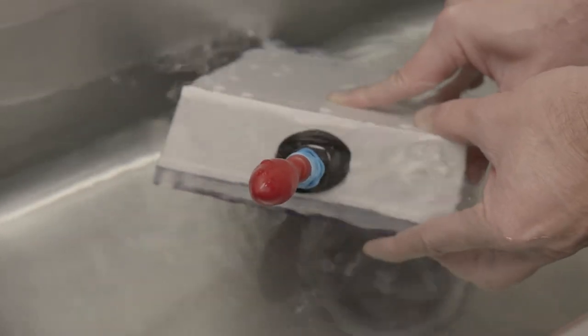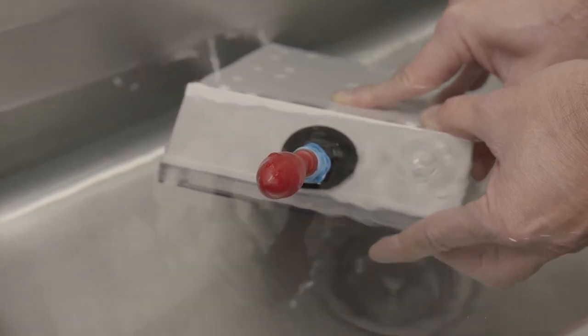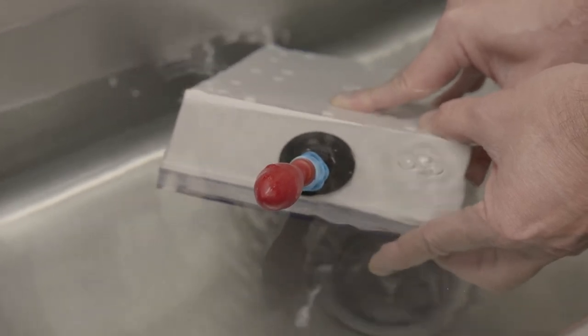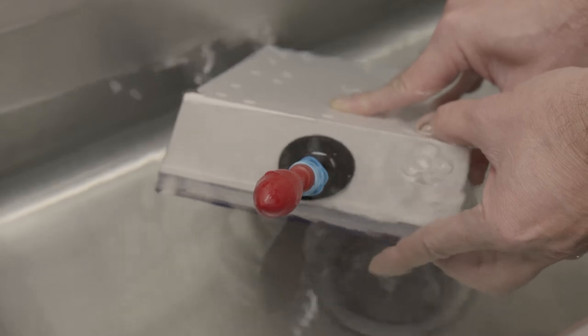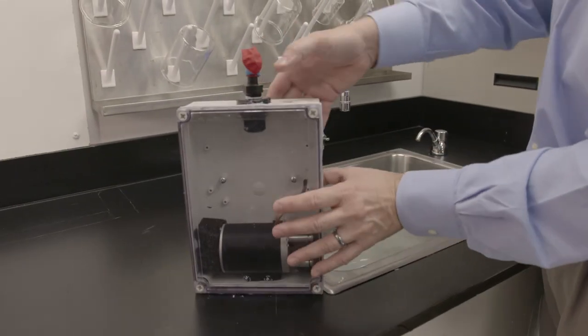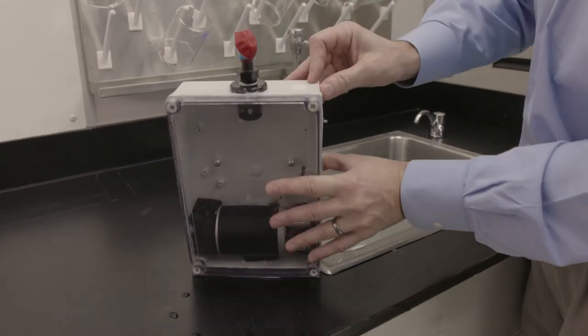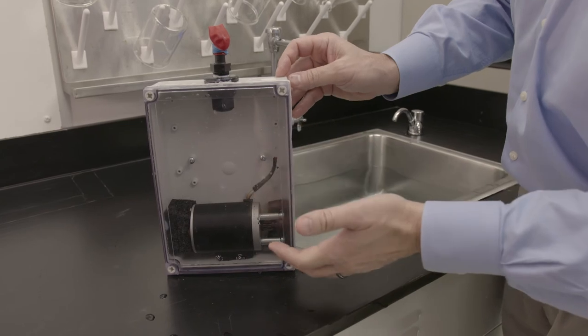As you can see, the air is escaping through the Porex IP protection vent and the balloon is not inflating. Even though the vent was fully submerged under the water, no water has entered the enclosure.